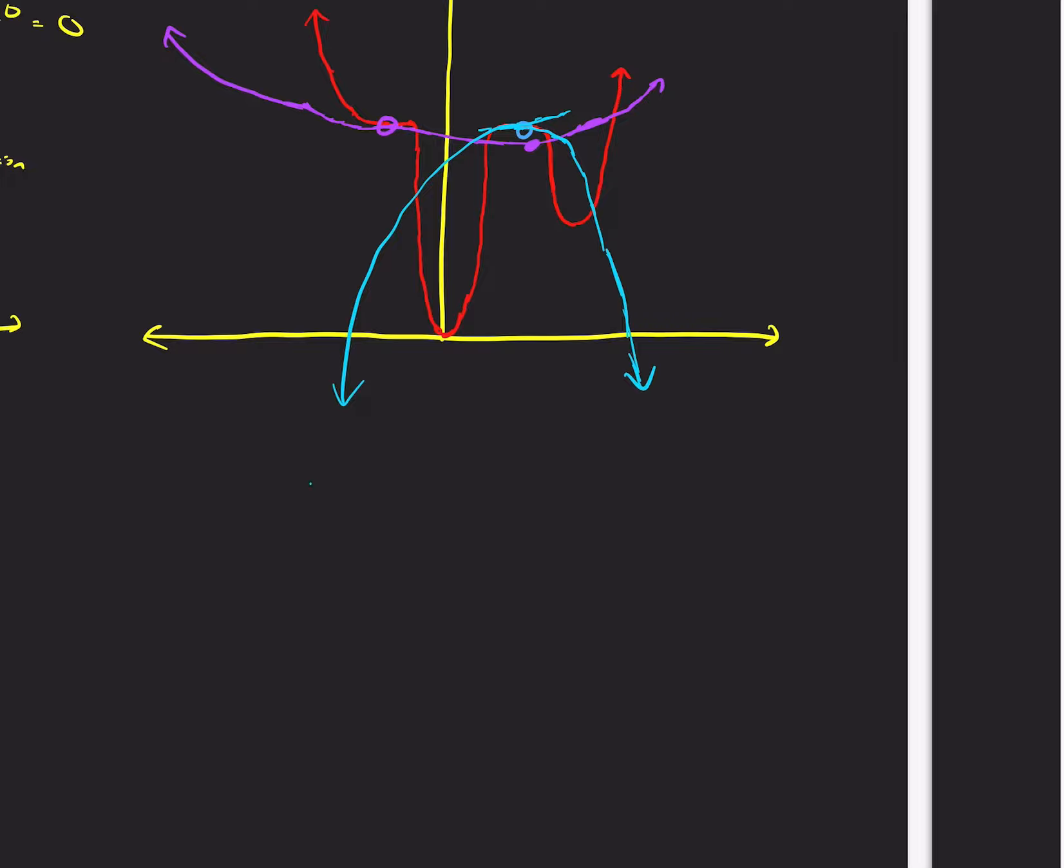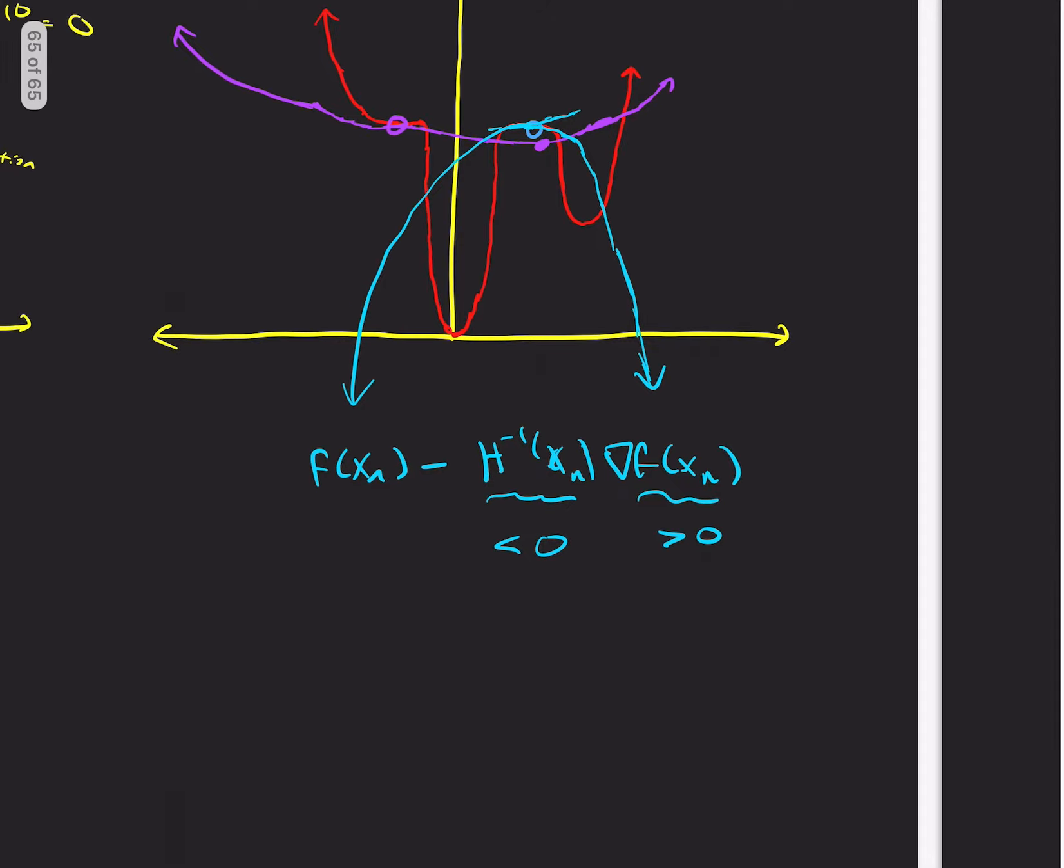So if I take f of, f of x_n minus Hessian inverse at x naught, gradient f of x, or n, f of x_n. So the gradient is positive. This will be negative. And so we're actually going to step in that direction.